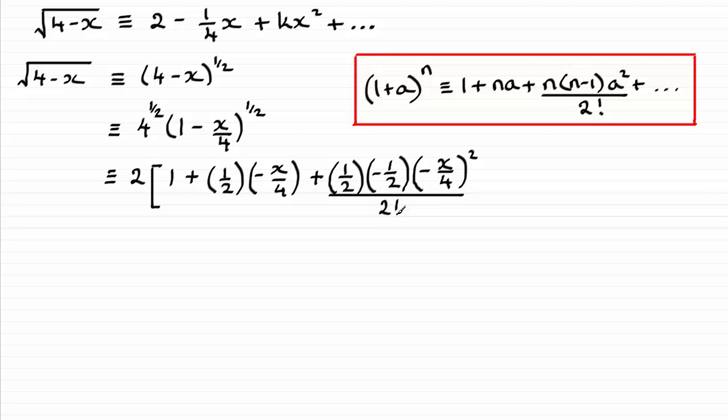Remember, 2 factorial is 2 times 1, which is really just going to end up as 2, and we've got plus and so on. Okay, don't forget that, and just close that bracket on the end there.